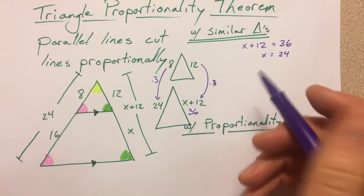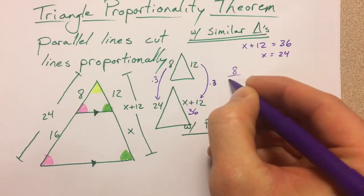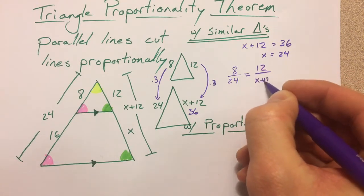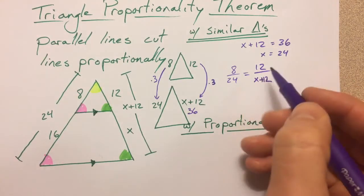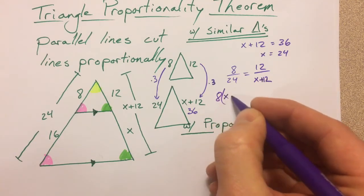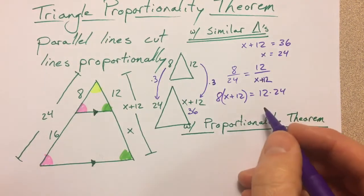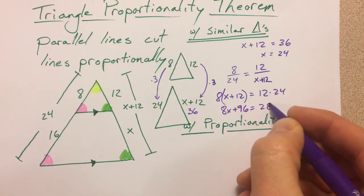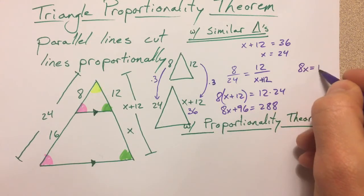I know some of you have become big fans of cross multiplying and proportions, and so you could still do that. You could compare your 8 to your 24, you can compare your 12 to your x plus 12. I just think scale factor works a lot faster, because otherwise you've got to do 8 times x plus 12 and 12 times 24 and so on and so forth, and so you get 8x plus 96 equals 288. You subtract your 96, you get 8x equals 192.